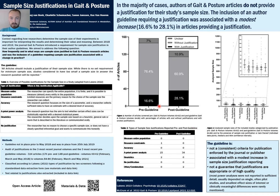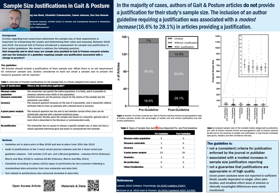Briefly, directing your attention to this figure here: these are the N of the articles, and in the bars you can also see the percentages. Articles with a justification are shown in black, without a justification in light gray, and unclear in dark gray. You can see that pre-guideline, only 16.6% of articles provided a justification of one of these types. Whereas post-guideline, this did moderately increase to 28.1%. And in this table, you can see that the predominant type of justification used was an a priori power analysis at both time points.